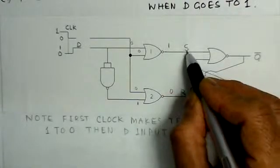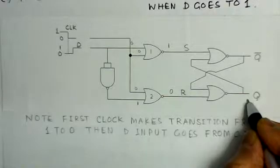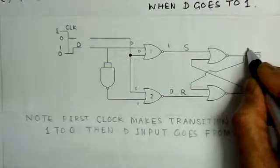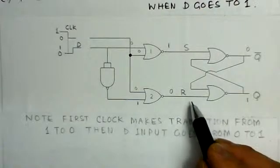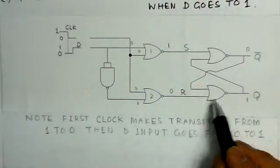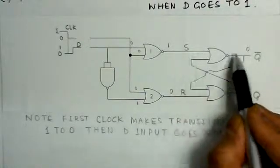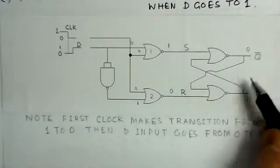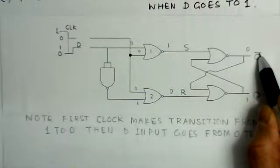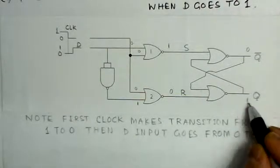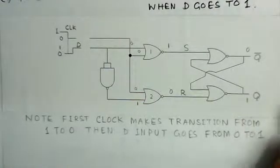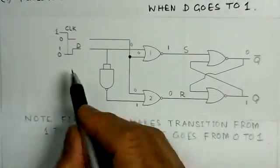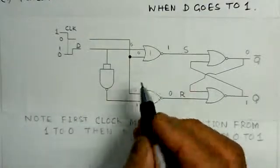Since S (set) input is 1 and R (reset) input is 0, the flip-flop is set and Q output goes high. Note that for this NOR latch, the terminal positions are inverted — Q-bar is at the top and Q is at the bottom — so Q=1 here. This confirms the set condition at the clock transition.